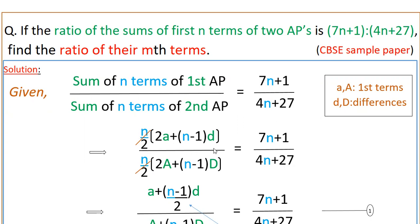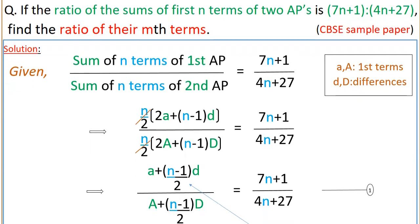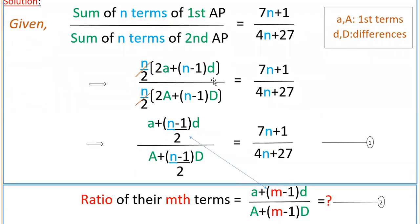We have to find the ratio of their mth terms. We know that the mth term in an AP is a plus m minus 1 into d. If you divide both numerator and denominator by 2, you get a plus (n minus 1)/2 into d divided by A plus (n minus 1)/2 into D, which equals 7n plus 1 by 4n plus 27.